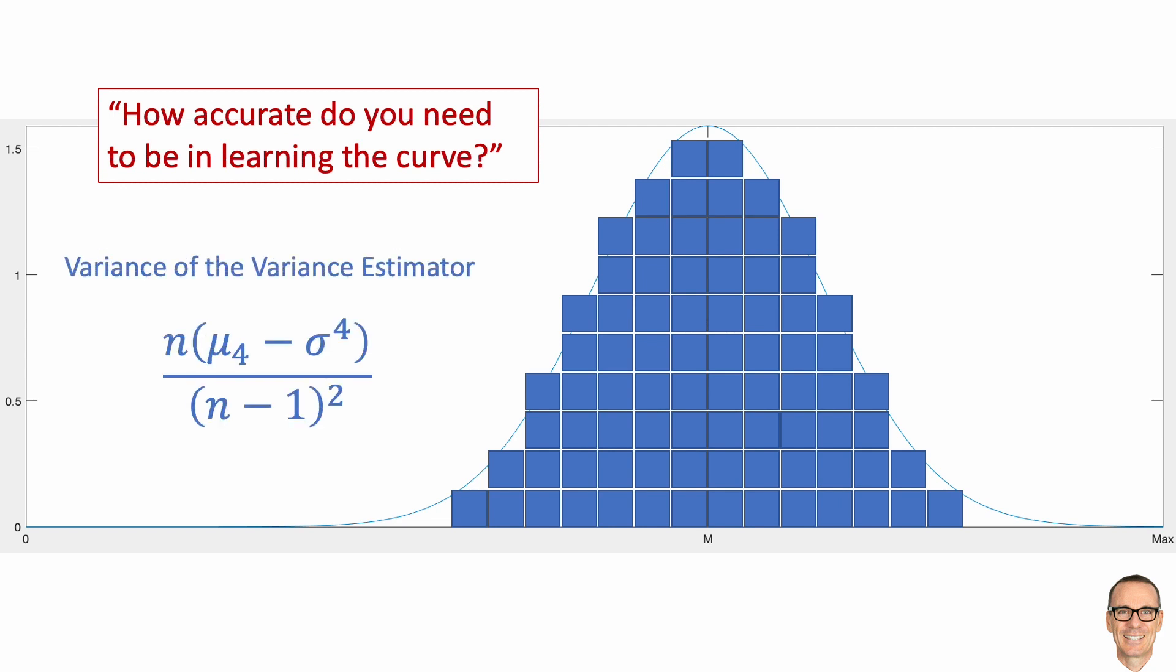This equation holds the answer. It tells us the relationship between the number of samples and the variance of the estimate of the Gaussian curve's variance. And if that sounds like a bit of a mouthful and you'd like to know more about it, then you can look out for an upcoming video on the channel. It will explain all this maths in more detail. In summary, though, it tells us how accurately we can estimate the width of the bell curve.